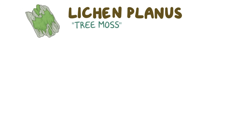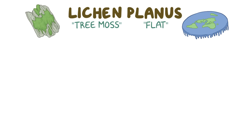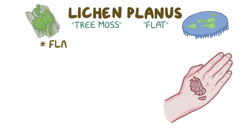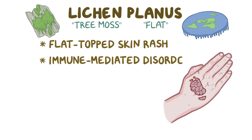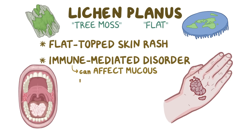With lichen planus, lichen means tree moss and planus refers to flat. The reason it's called that is because lichen planus is a flat-topped skin rash that looks a bit like tree moss. Lichen planus is an immune-mediated disorder, meaning that the immune system has started attacking its own skin, resulting in the rash. Lichen planus can also affect mucous membranes.